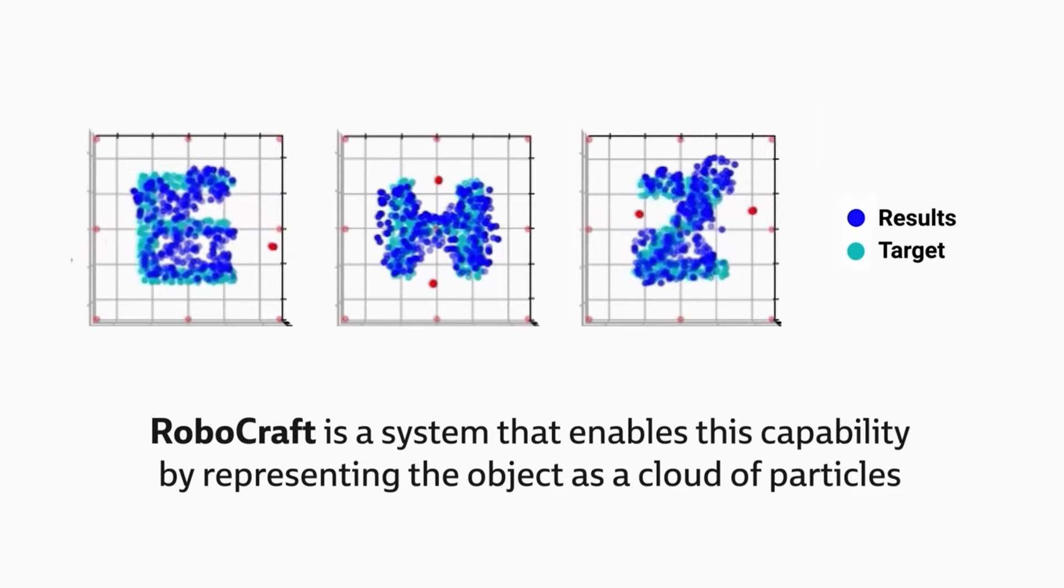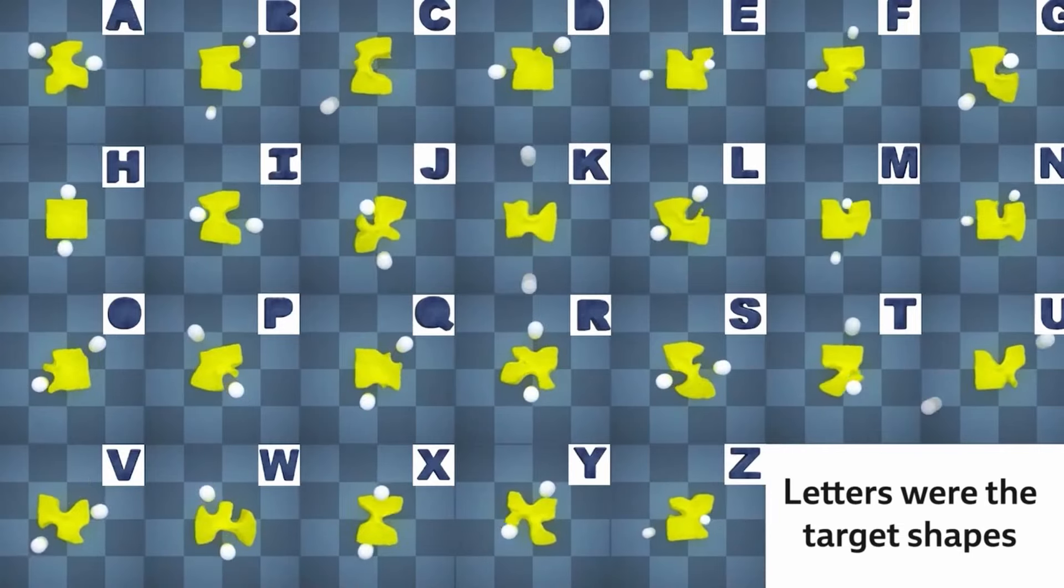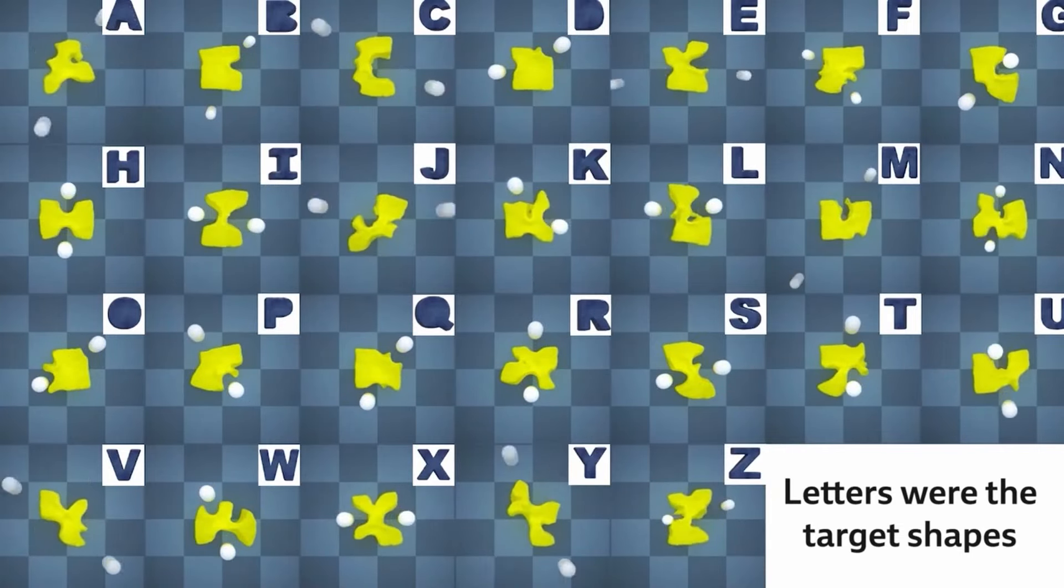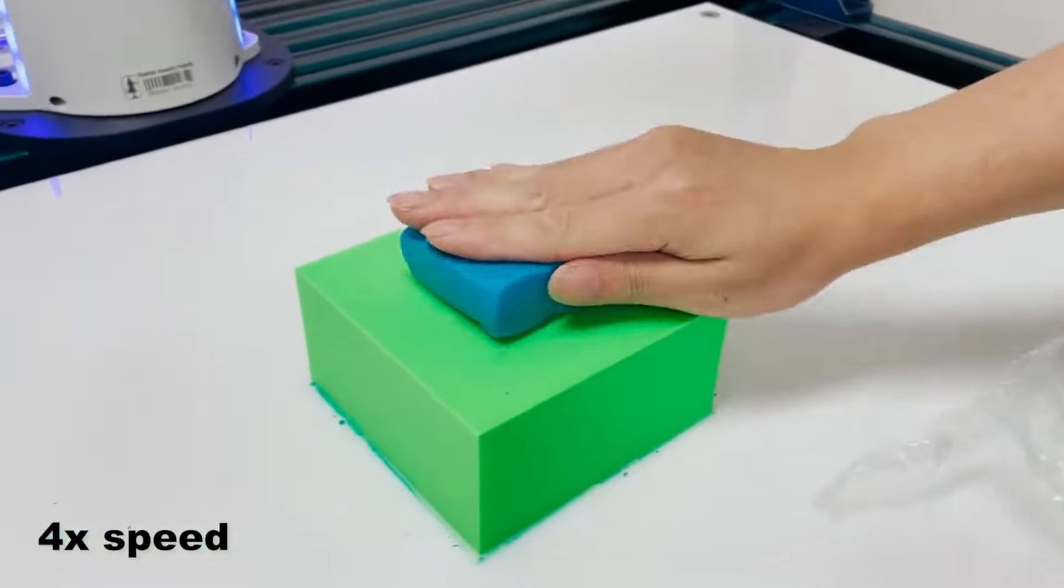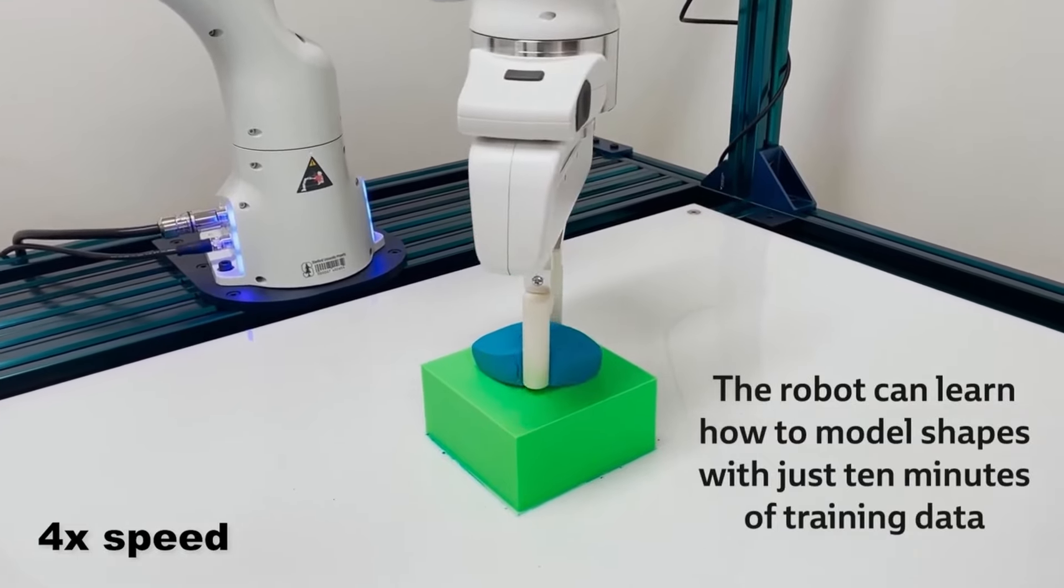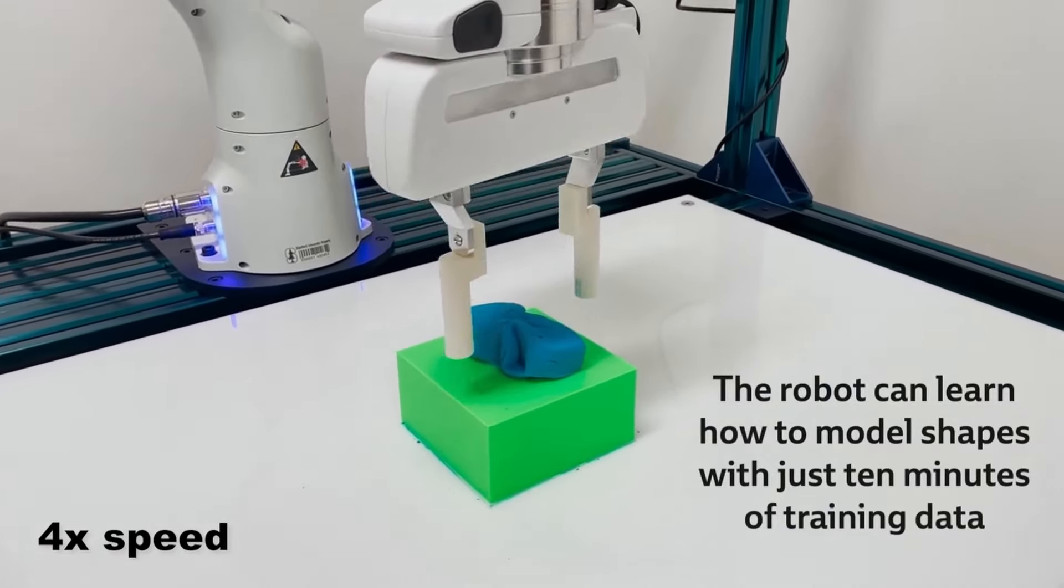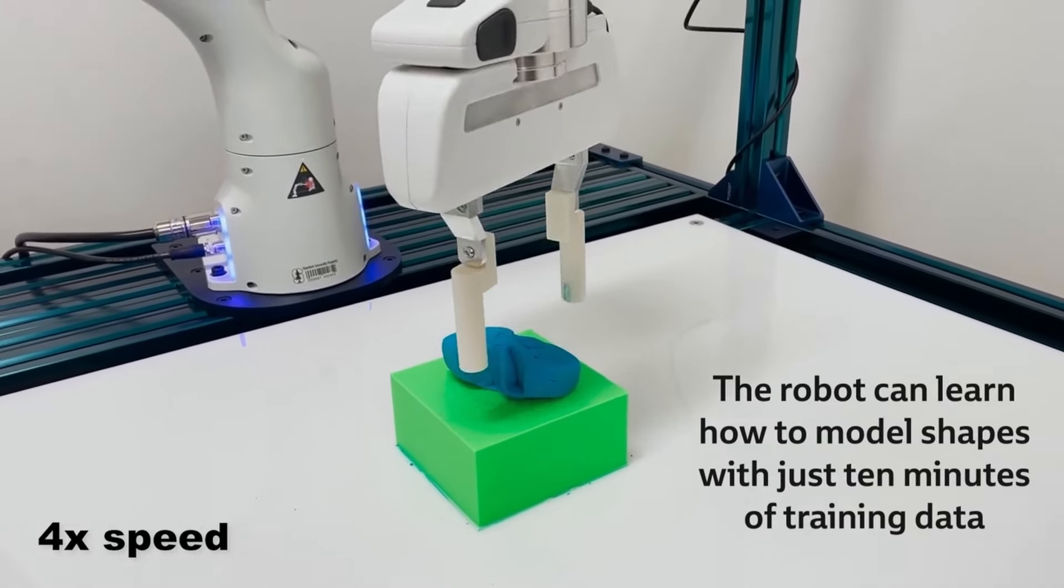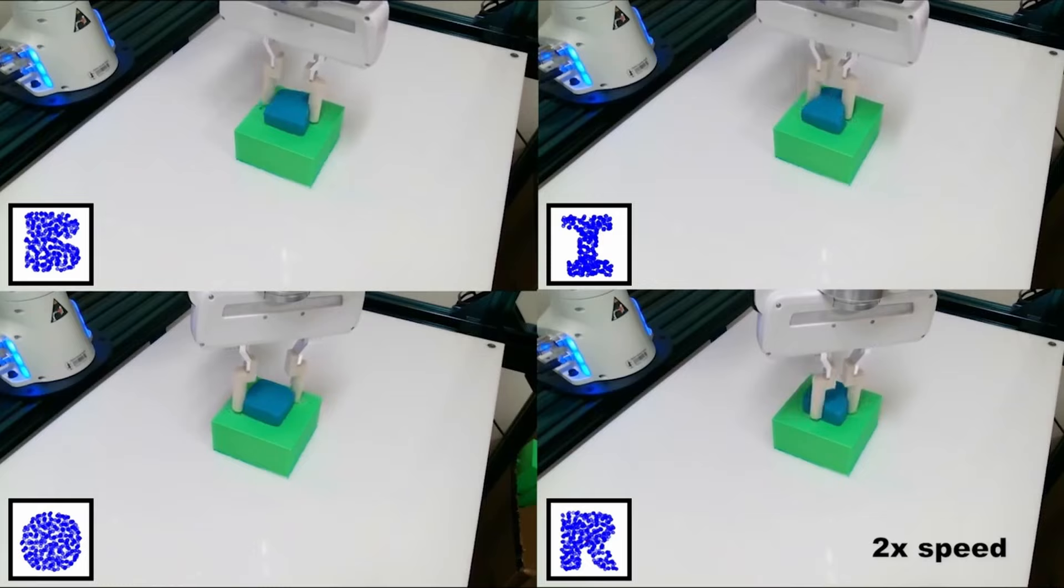With just 10 minutes of data, the two-fingered gripper rivaled human counterparts that teleoperated the machine, performing on par and at times even better on the tested tasks. Modeling the manipulated objects with high degrees of freedom are essential capabilities for robots to learn how to enable complex industrial and household interaction tasks, like stuffing dumplings, rolling sushi, and making pottery. While there's been recent advances in manipulating clothes and ropes, the researchers found that objects with high plasticity like dough or plasticine was a largely underexplored territory.